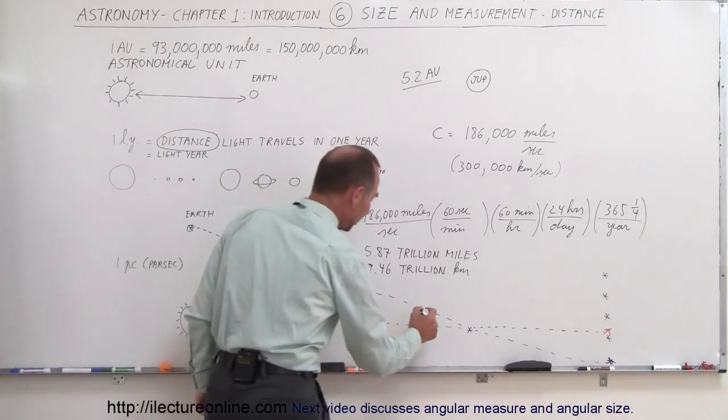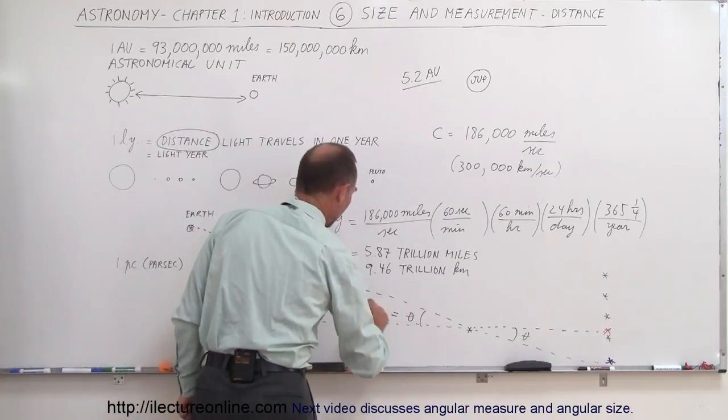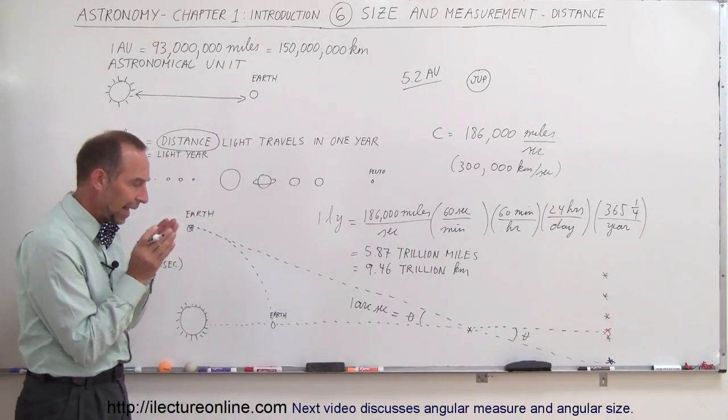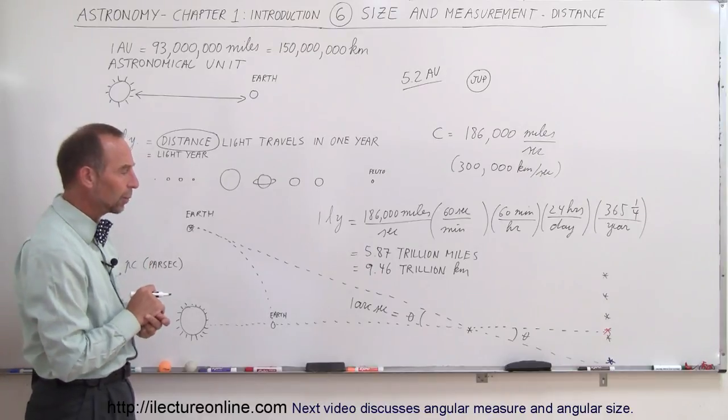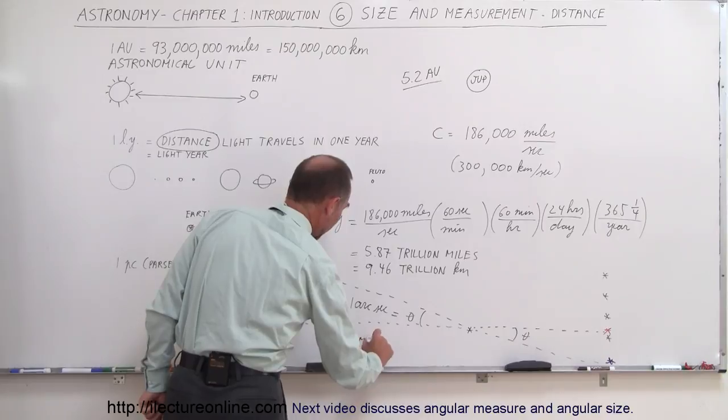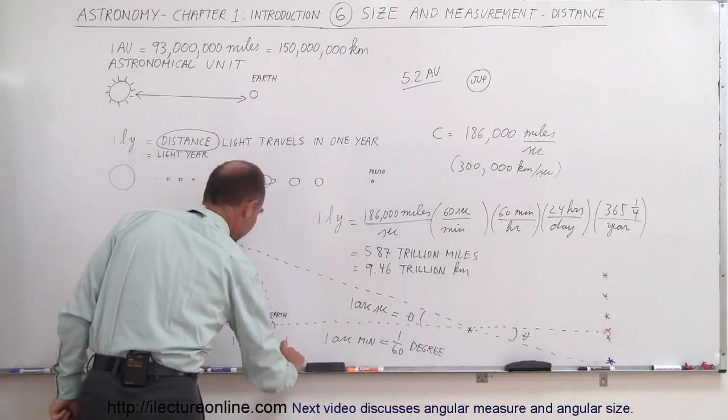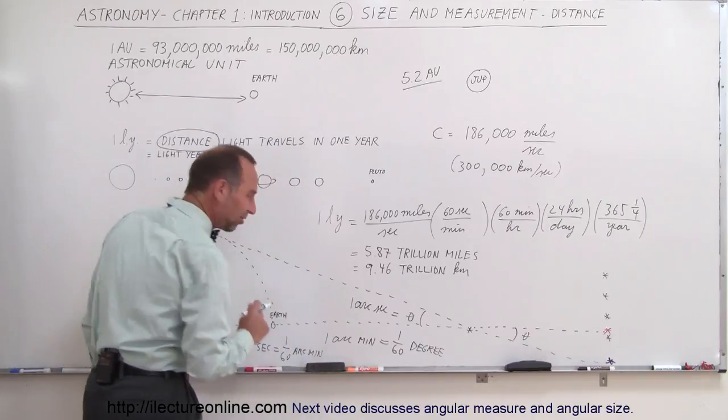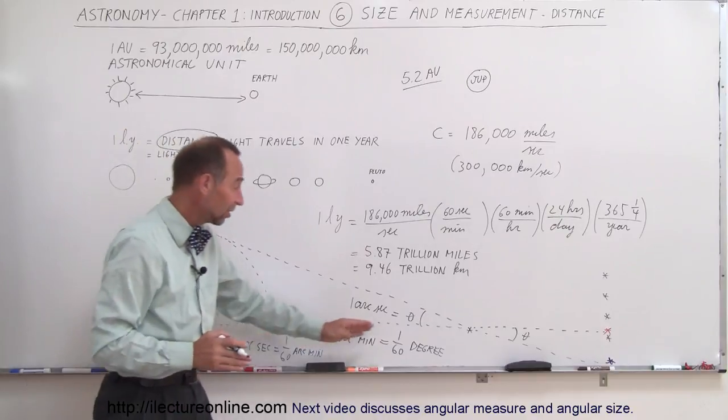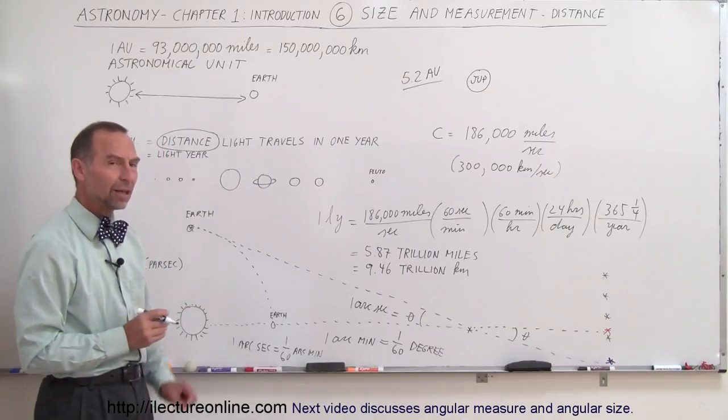Now, it turns out, if this angle right here, this angle, let's call this angle theta, and this angle right here, let's call this angle theta. If that angle is equal to one arc second, now what is an arc second? Well, it's an angle of measurement. One arc minute is equal to one sixtieth of a degree. And one arc second is equal to one sixtieth of an arc minute. Kind of like there's 60 seconds in a minute and 60 minutes in an hour. Well, an arc second is one sixtieth of an arc minute and an arc minute is one sixtieth of one degree. That means that one arc second is one 3600th of a degree, a very, very, very tiny angle. And yes, we can measure that.